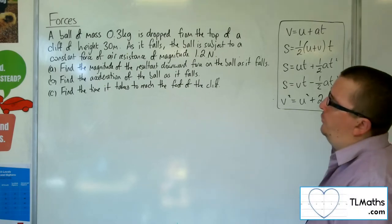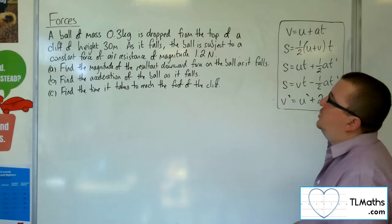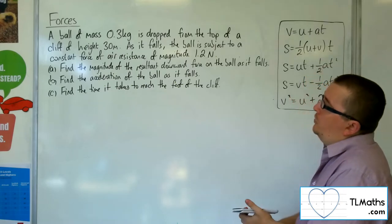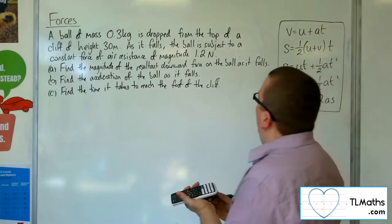As it falls, the ball is subject to a constant force of air resistance of magnitude 1.2 newtons. Find the magnitude of the resultant downward force on the ball as it falls.